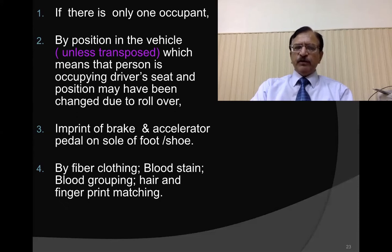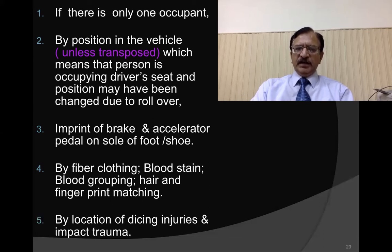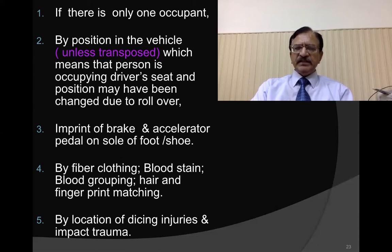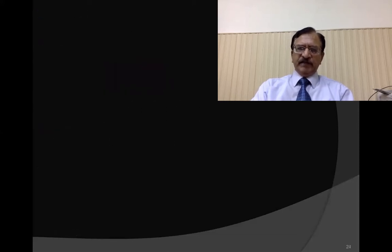Further identification comes from fiber clothing evidence — blood stains, blood grouping, hair, and fingerprint matching. Identification is also made by the location of dice injuries or impact trauma. Dice injuries are caused by small broken glass fragments, causing small abrasions and lacerations on the face. Coup and contrecoup injuries also help determine who was the driver, along with specific injuries caused by objects that passengers would not have.